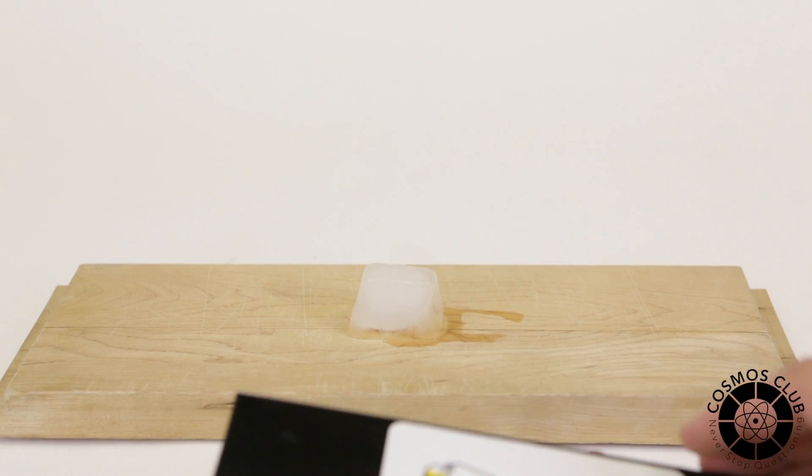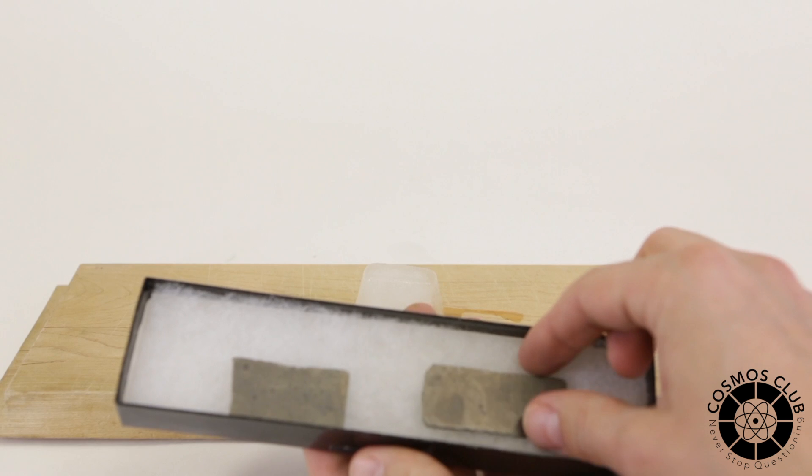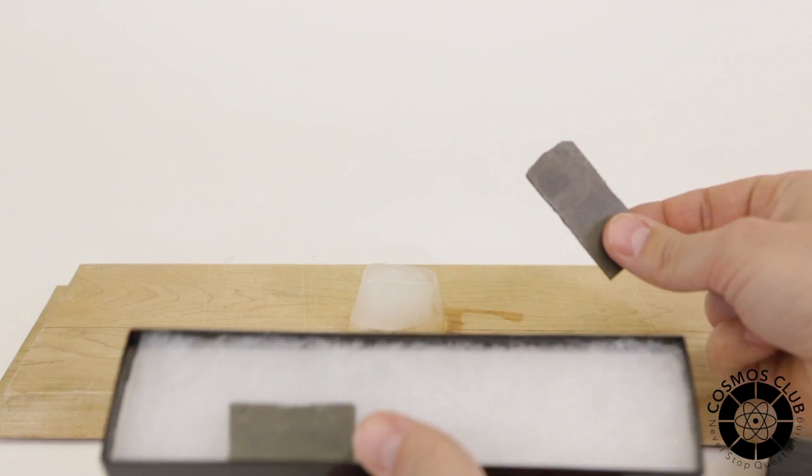First off, graphene is quite brittle. And as you can see, we kind of broke our graphene knife, but that's okay. We've got a chunk of graphene here.